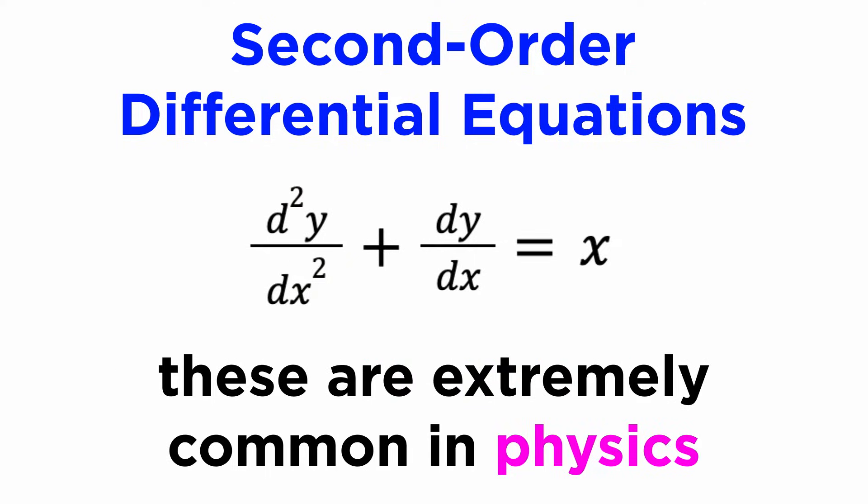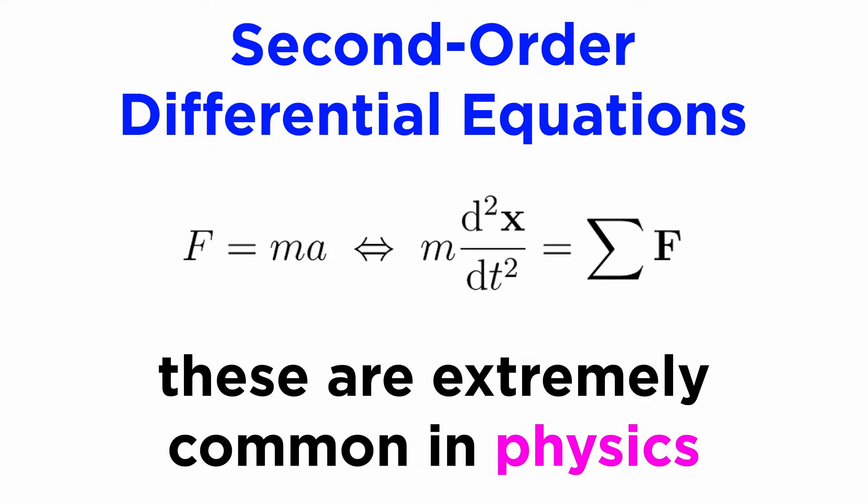As it turns out, this kind of differential equation crops up everywhere in physics. That's because Newton's second law, while commonly written as F equals ma, is actually a second-order differential equation in disguise, since acceleration can be defined as the rate of change in velocity, which in turn is the rate of change in displacement. We'll see more examples of this kind of thing later, but first, let's get to grips with the basics.